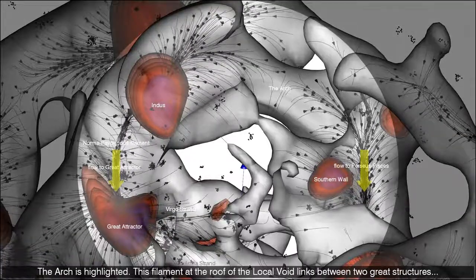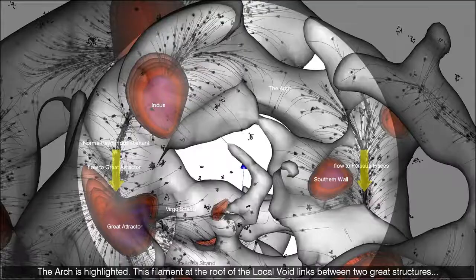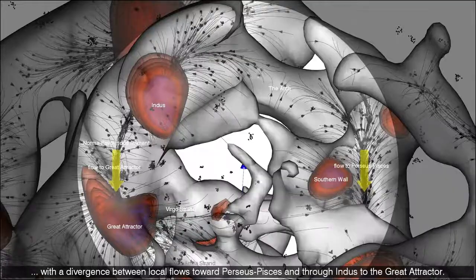The arch is highlighted. This filament at the roof of the local void links between two great structures with a divergence between local flows toward Perseus Pisces and through Indus to the great attractor.